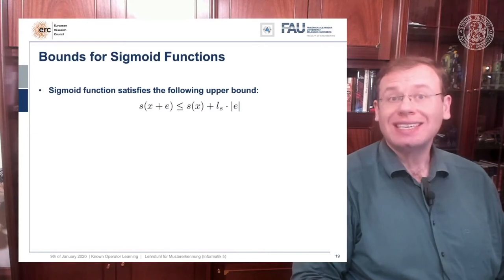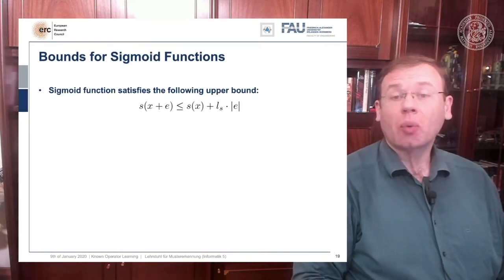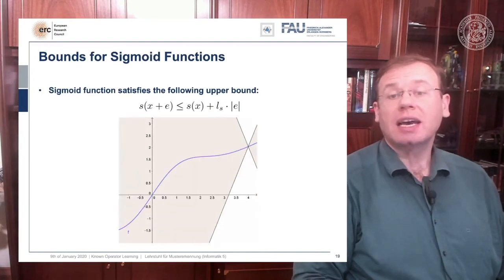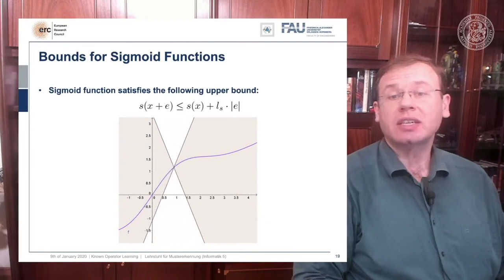move to a direction e, then I can always find an upper bound by taking the magnitude of e times the highest slope that occurs in the function plus the original function value. So it's a linear extrapolation, and you can see this in this animation here.